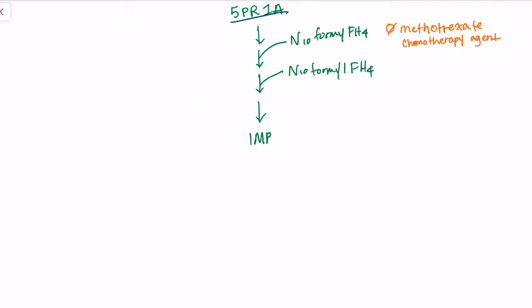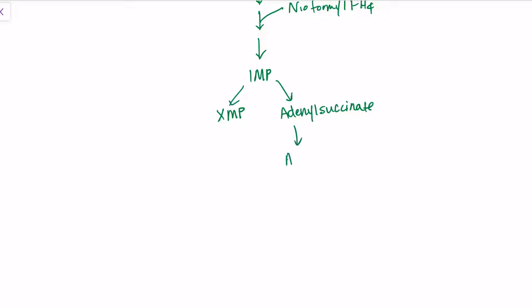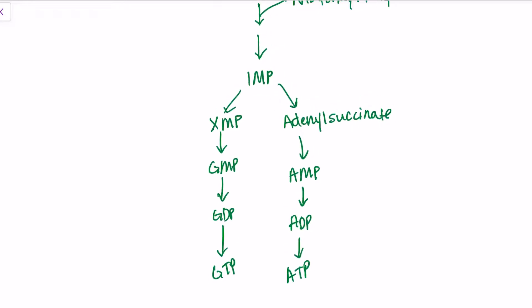From IMP, we have two separate routes. One is for creation of AMP, ADP, and ATP. The other goes to GMP, GDP, GTP. Before we get there, we go to two compounds: XMP and adenylosuccinate. From there we can go to AMP, ADP, and ATP. And from here we go to GMP, GDP, GTP.